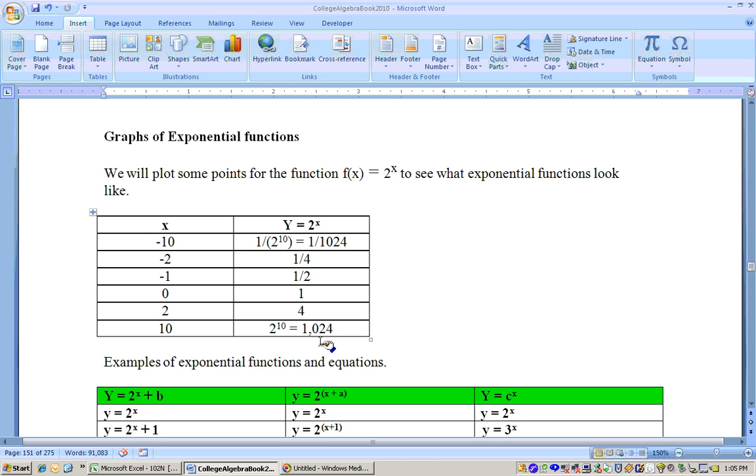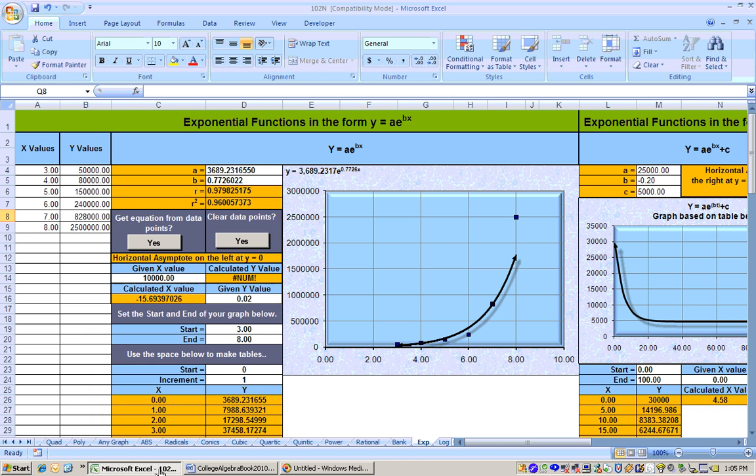And if you plot these points, these are some pretty huge points here. 1024 is really high at an x value of 10, and it's very close to 0 at negative 10. And we could plot those by hand, or we could go to the Excel sheet and get the idea of what these things would look like.